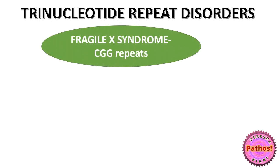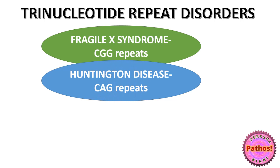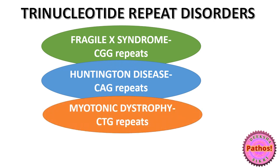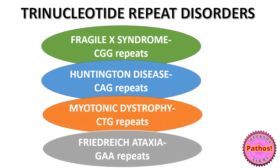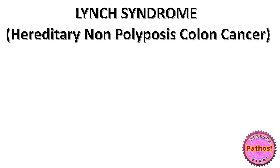One example of inherited diseases are your trinucleotide repeat disorders like Fragile X syndrome, which occurs due to CGG repeats; Huntington due to CAG repeats; Myotonic dystrophy due to CTG repeats; and Friedreich ataxia due to GAA repeats. But the more commonly associated one that you read about is Lynch syndrome, also known as hereditary nonpolyposis colon cancer.